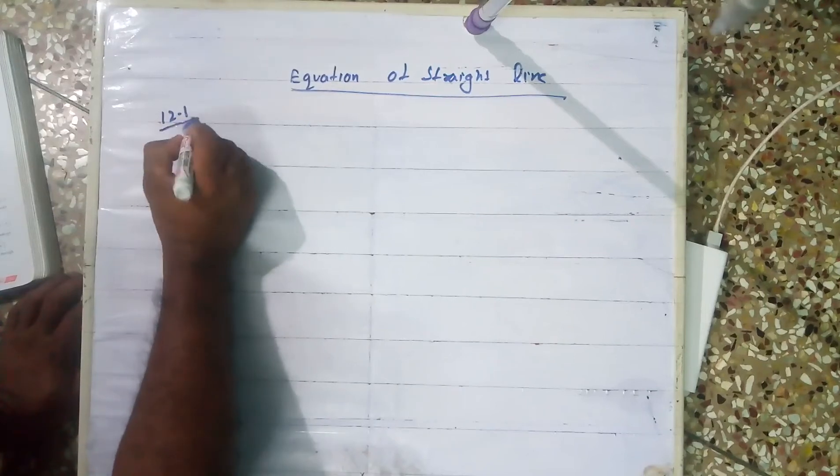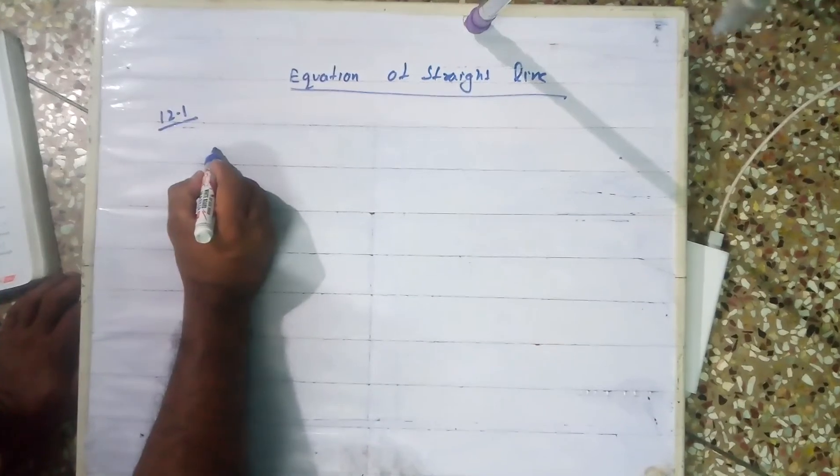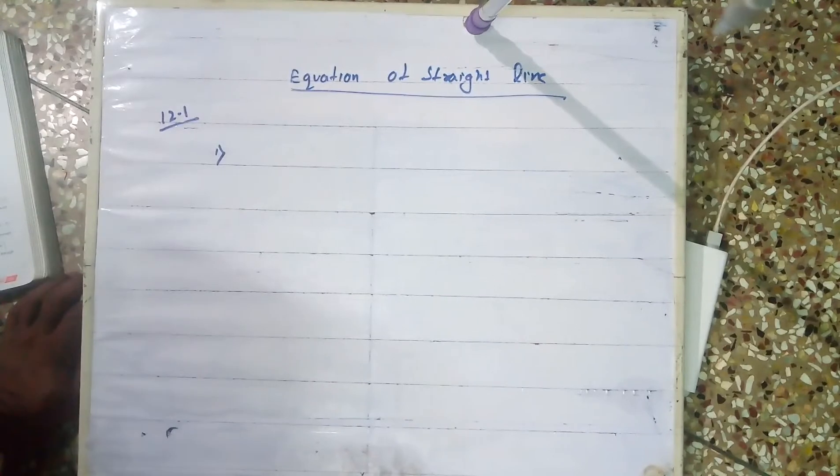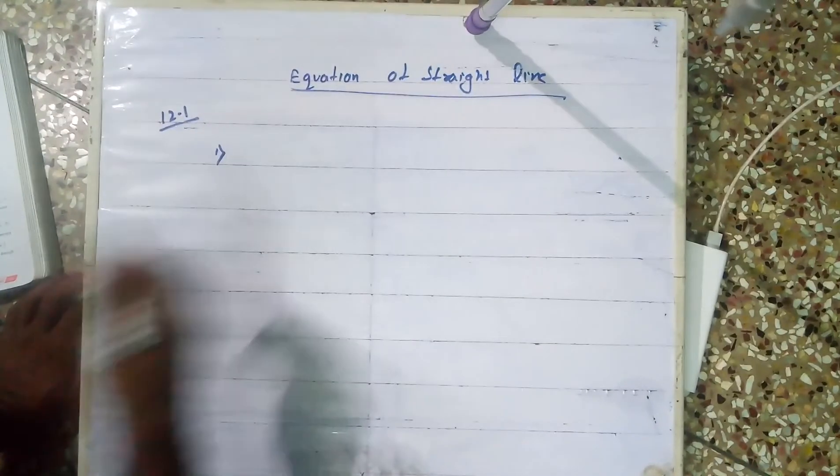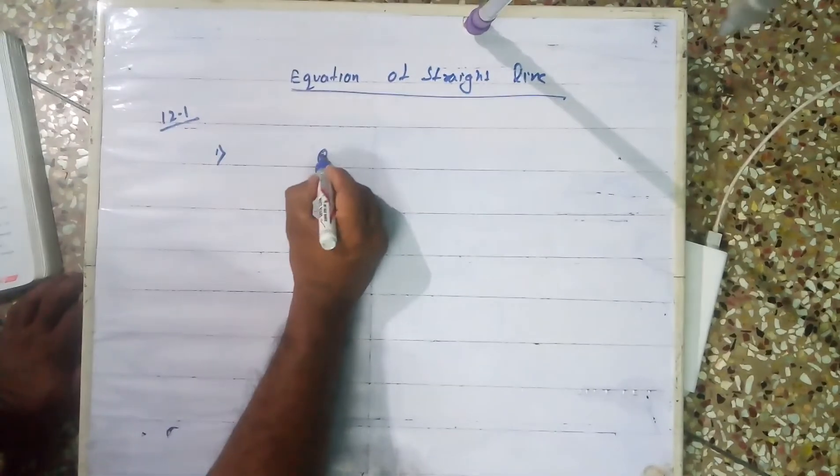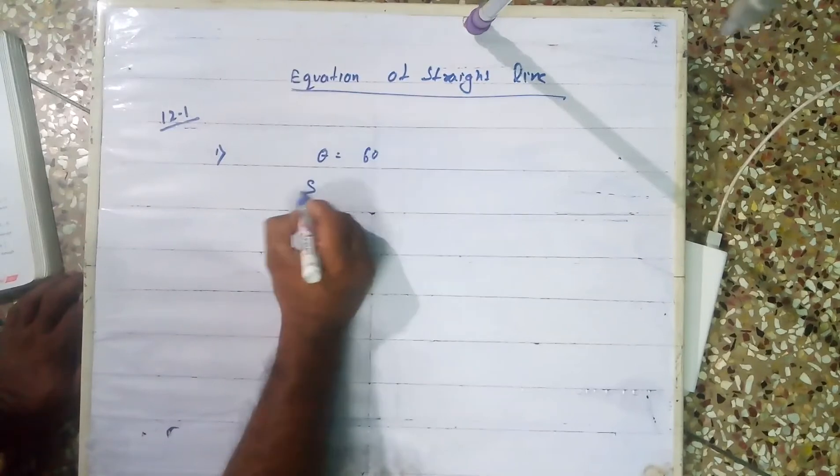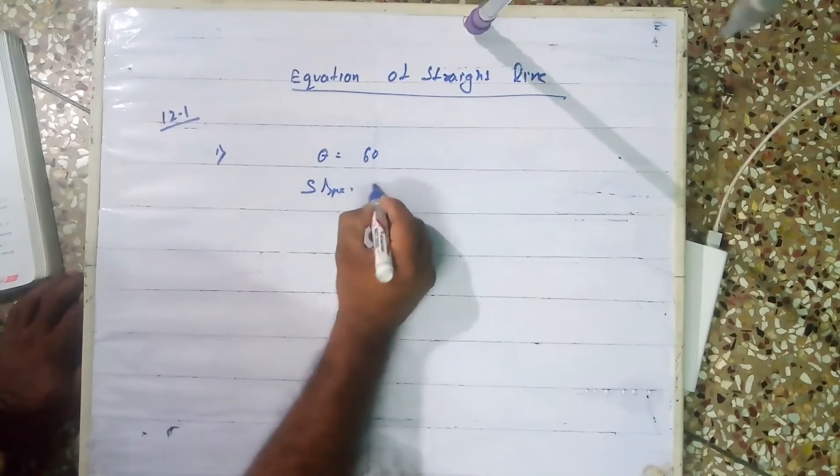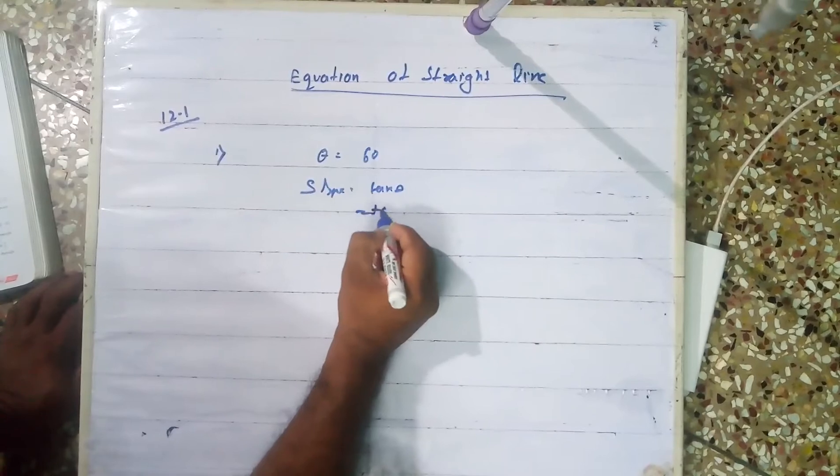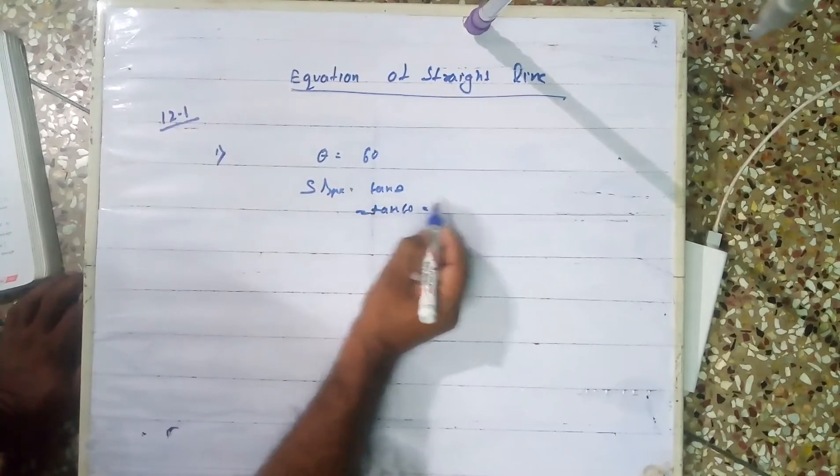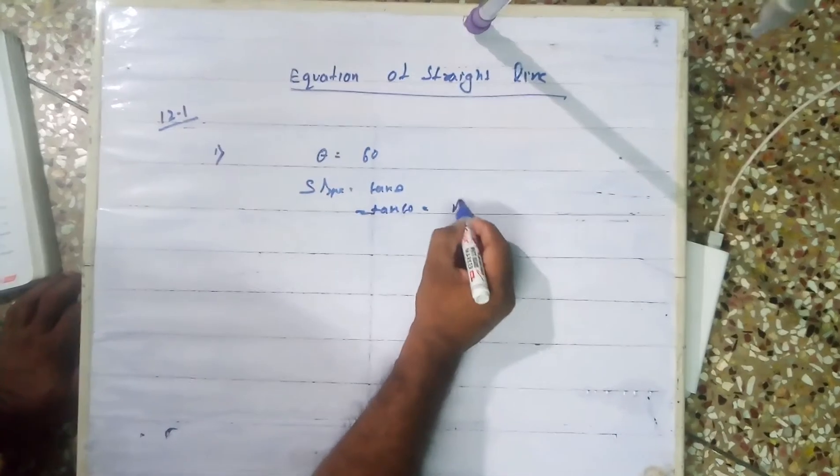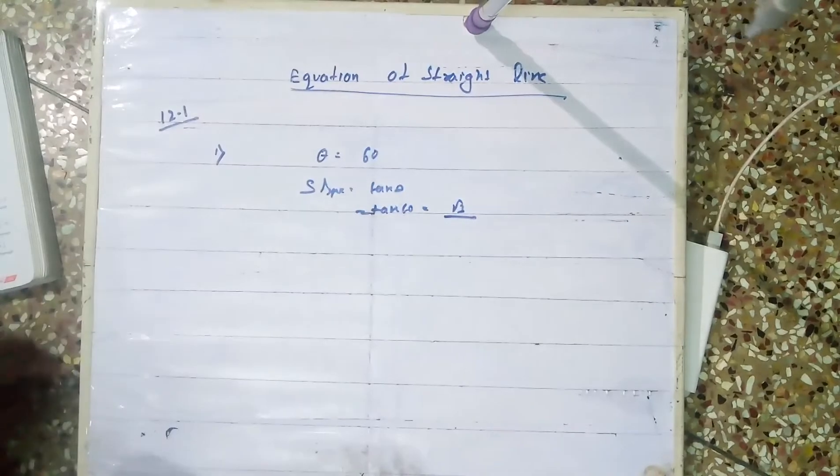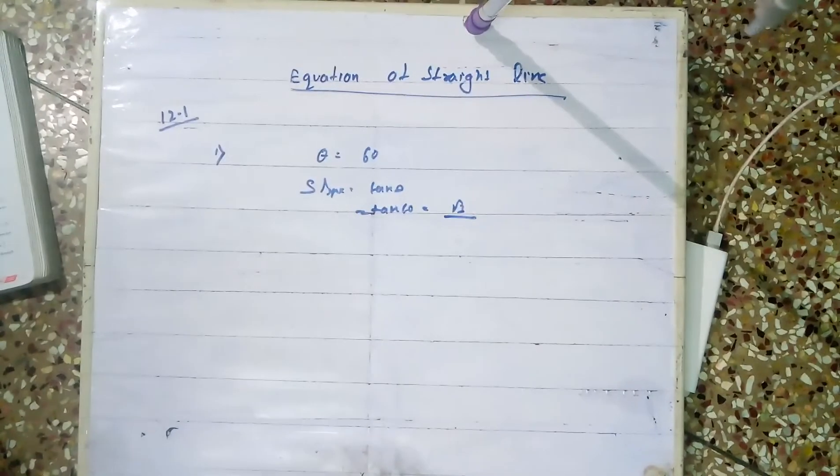Chapter number 12.1, question number 1 is very easy. Inclinations are given, find the slope. Inclination is 60 degrees. Suppose theta equals 60 degrees. Slope equals tan theta, that is tan 60 degrees, which equals root 3. Clear? Similarly...